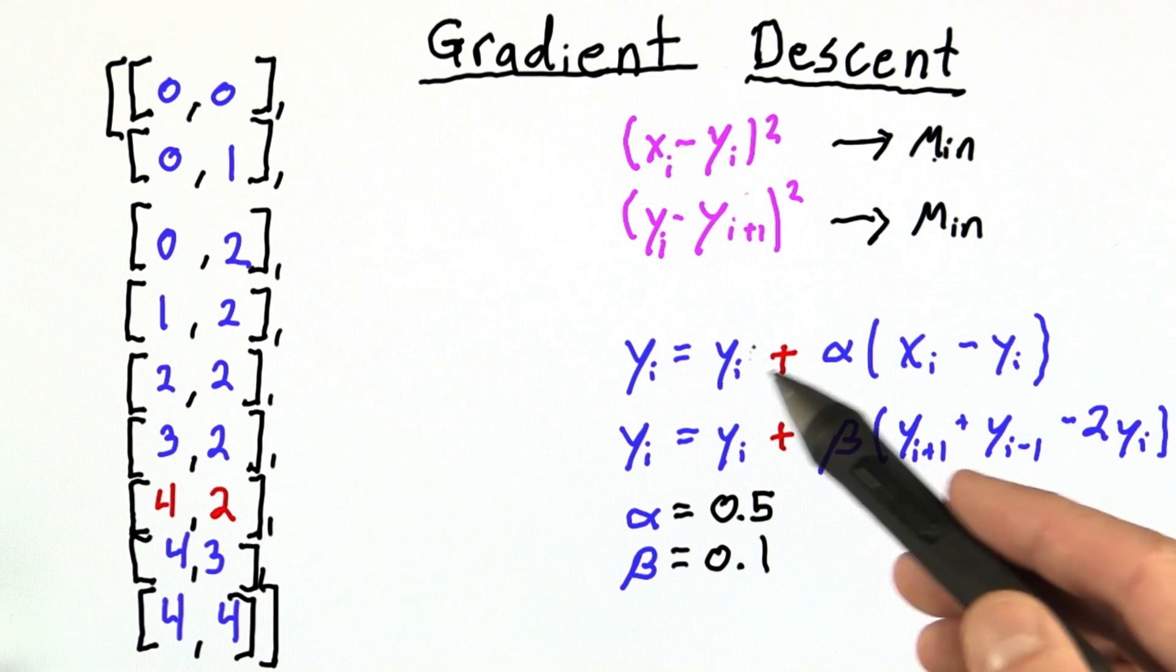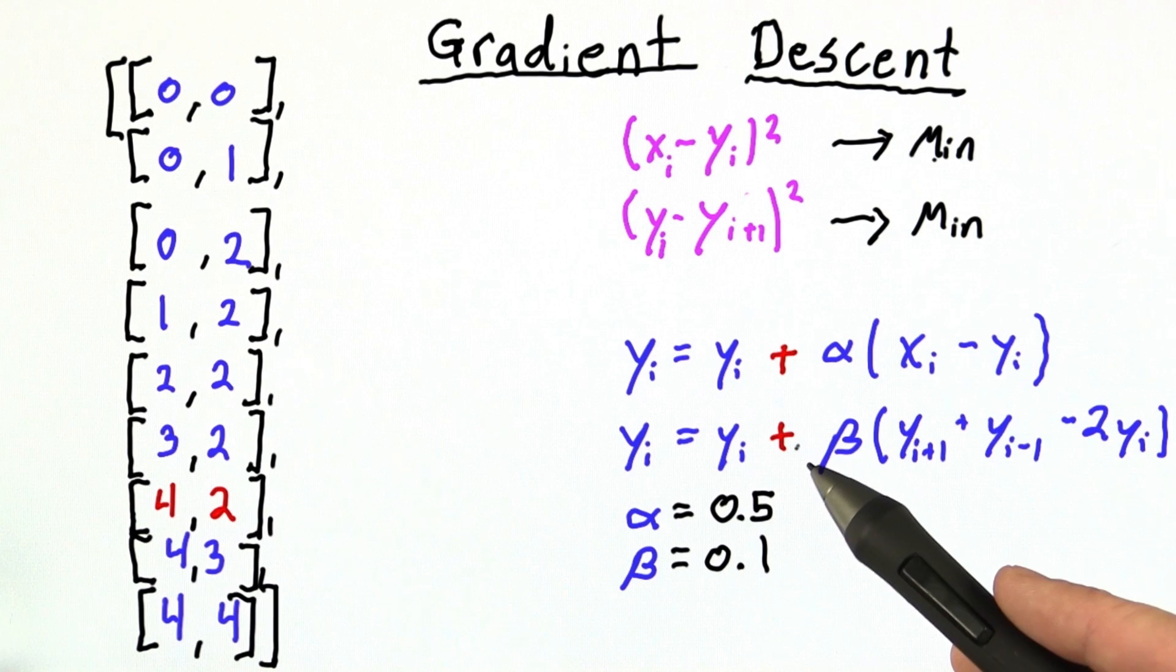Also, those minus signs that you saw here should actually be replaced with plus signs if we want this gradient descent implementation to converge.